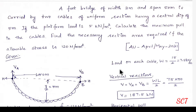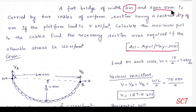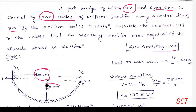Hello friends. Now we are going to talk about suspension bridges. A footbridge with width 3m and span 50m is carried by 2 cables of uniform section having a central dip of 5m. If the platform load is 5kN per m², then the UDL load becomes 5kN per m in this unit.